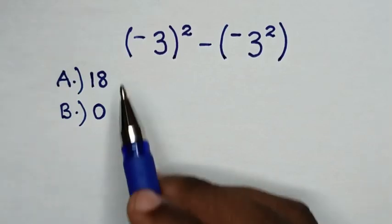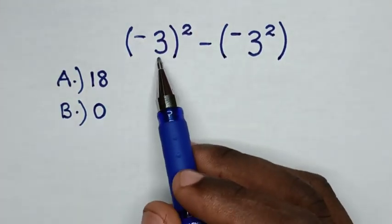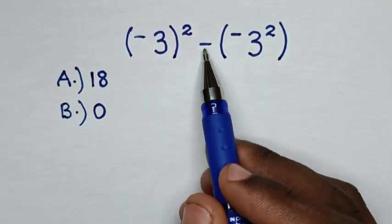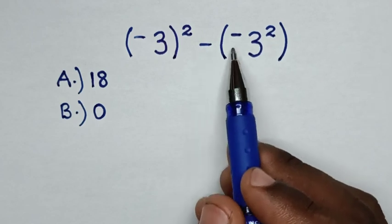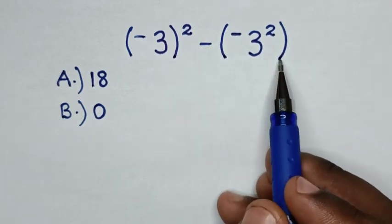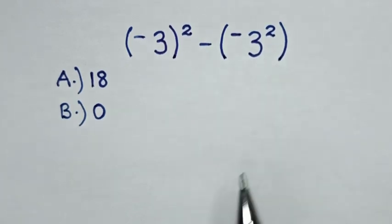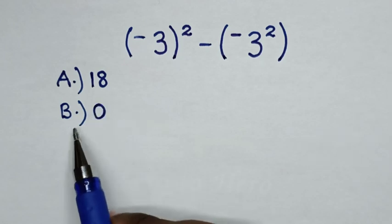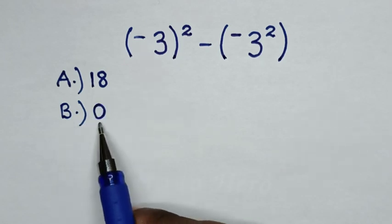Hello. How to solve negative 3 inside the bracket squared minus negative 3 squared. Select between the answers: A, 18; B, 0.